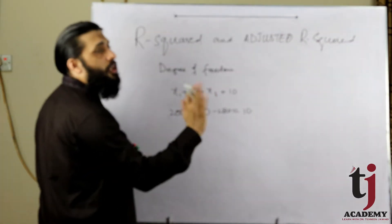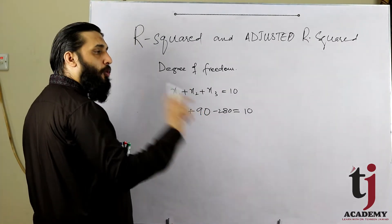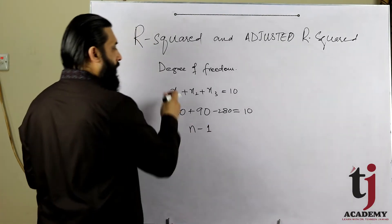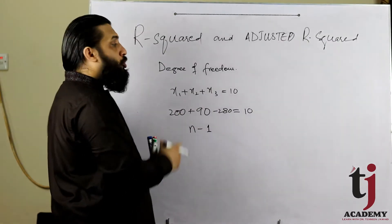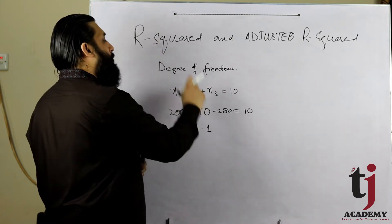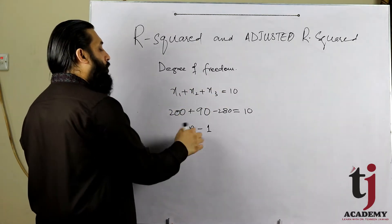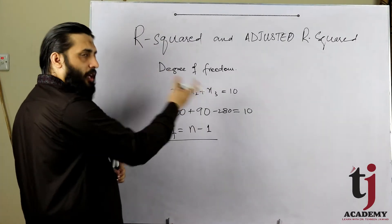جب degree of freedom نکالیں گے تو وہ observations جن میں آپ اپنی مرضی سے value رکھ سکتے تھے وہ آئے گا n minus 1۔ یعنی 3 میں سے 1 نکالنا، تو 2 اپنی مرضی سے رکھ سکتے ہیں۔ اگر 10 observations ہوں اور کوئی sum موجود ہو تو 9 observations آپ اپنی مرضی سے رکھ سکتے ہیں، صرف ایک observation بچے گا جو آپ کو مجبوراً رکھنا پڑے گا۔ Degree of freedom = n minus 1 for summation and averages.